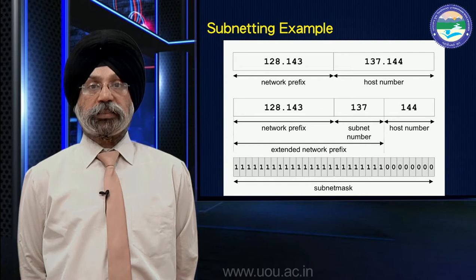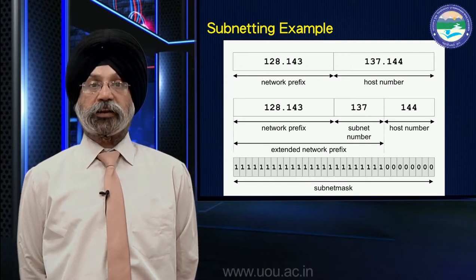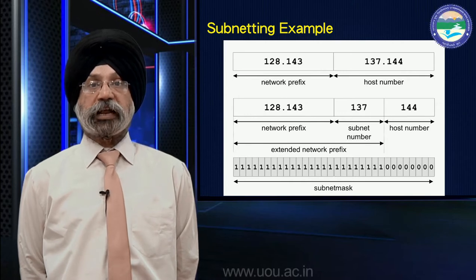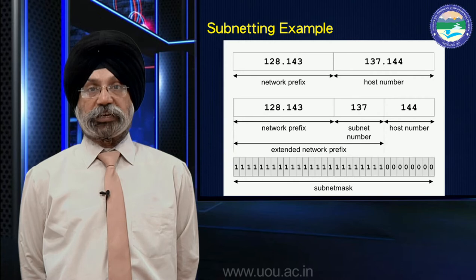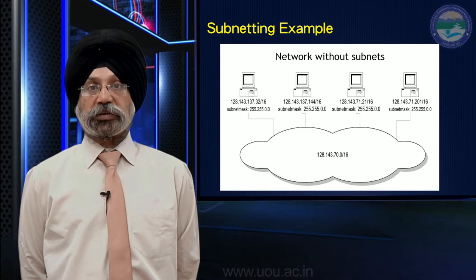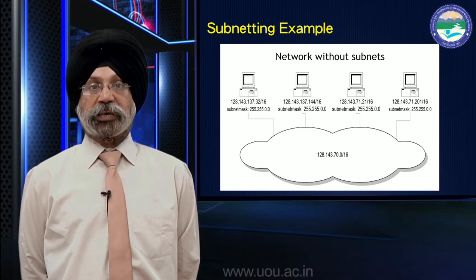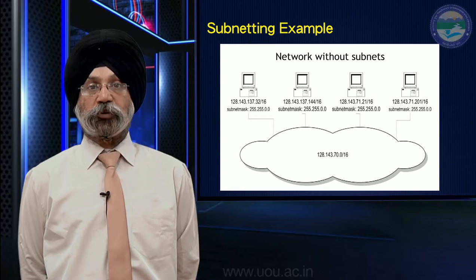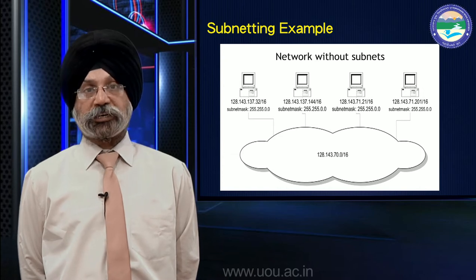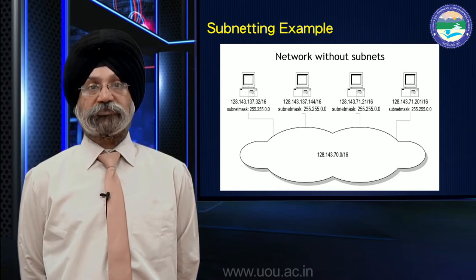When we take the third octet into the network prefix, this makes it the extended network prefix. So we have the network prefix 128.143, the subnet number 137. Without subnets, all hosts in the class B network are assigned addresses starting with 128.143, and you can see there are four hosts which have addresses like 128.143.137.32 and .16.